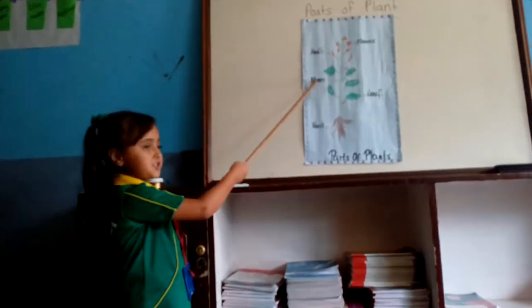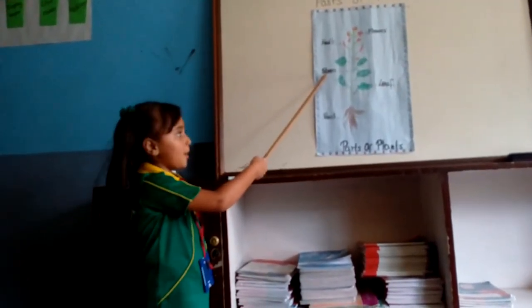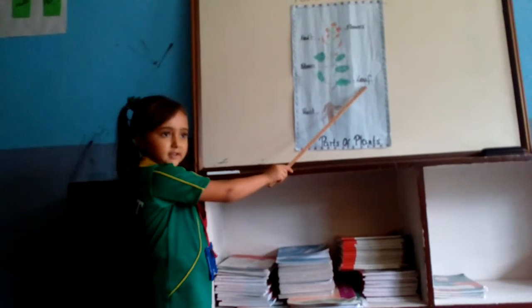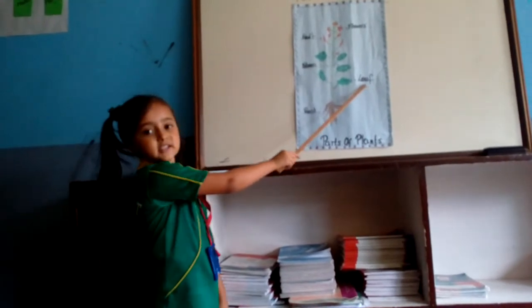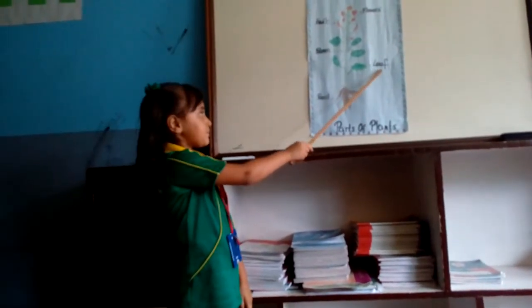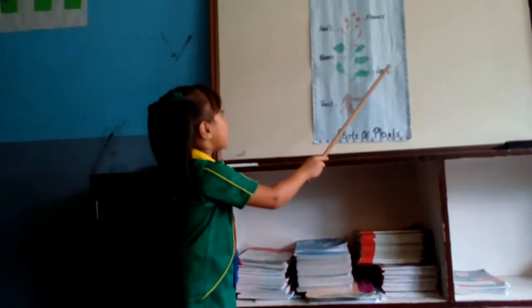This is the stem; it helps the plant to stand upright. This is a leaf — it makes food for the plant.